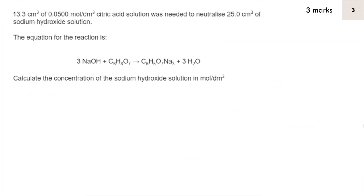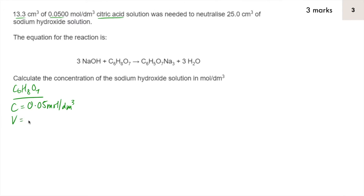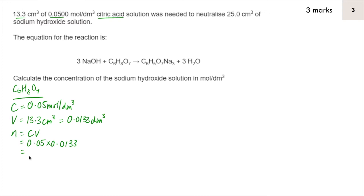Here's question 3 — pause the video, have a go, replay when you're ready. We have more information about citric acid, C₆H₈O₇, so I'll start there. It has a concentration of 0.05 mol/dm³ and a volume of 13.3 cm³, which we convert to dm³ by dividing by 1000. Number of moles equals concentration times volume: 0.05 times 0.0133 equals 6.65 × 10⁻⁴ moles.